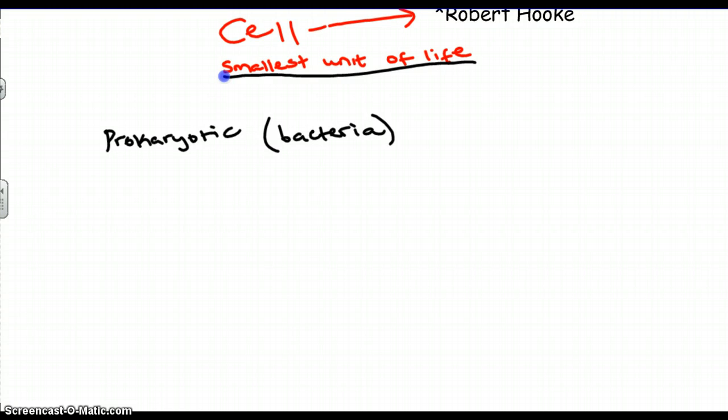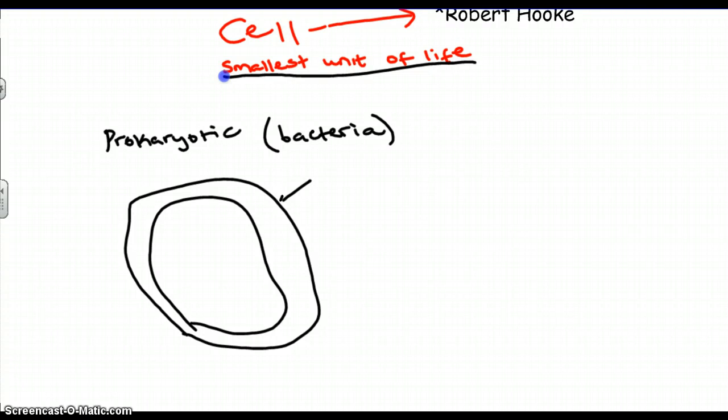And the simple structure of prokaryotic cells look something like this. Let's begin with only these two parts. Here, we have the outer layer of a cell, a prokaryotic cell. This is called the cell wall. What a cell wall does is give structure to the cell. Cell wall equals structure.